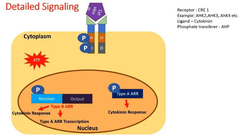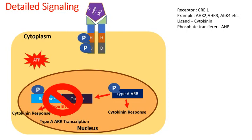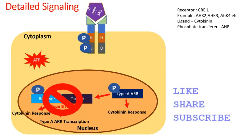On the other hand, Type A ARR also plays an important role in blocking the action of Type B ARR. Once Type A ARR is produced in adequate amounts, it not only produces cytokinin response mRNAs but also inhibits the role and activity of Type B ARR. Thus, Type A ARR is regulating its own concentration — a kind of autoregulation that we see here.